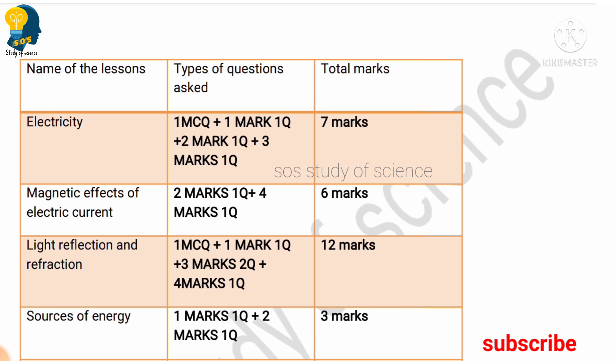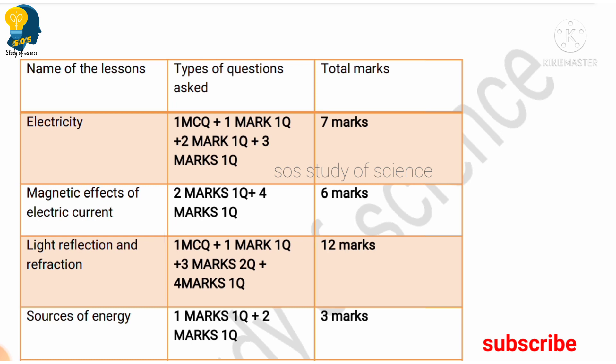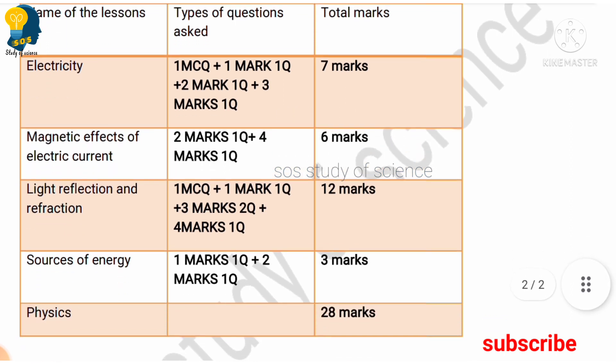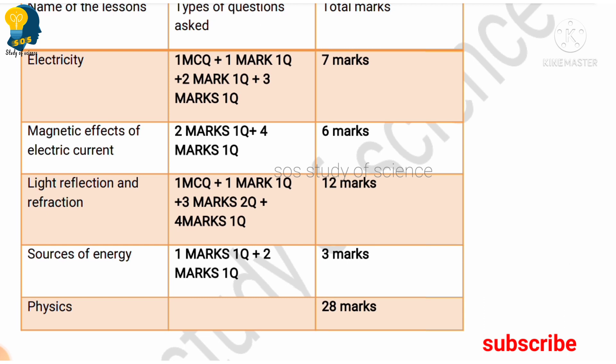For Light Reflection and Refraction, more weightage has been given than expected. We expected around eight marks based on previous papers, but 12 marks have been allotted — out of which there is one MCQ, one one-mark question, two three-mark questions, and one four-mark question. The last Physics lesson, Sources of Energy, has three marks allotted: one one-mark question and one two-mark question.